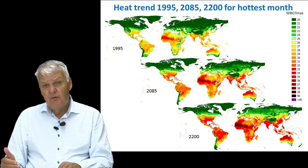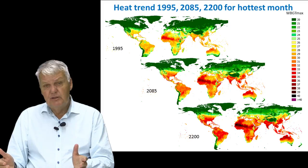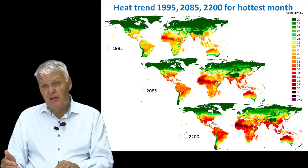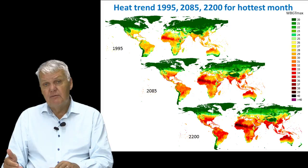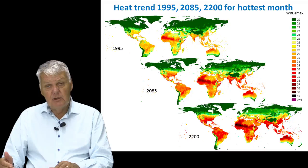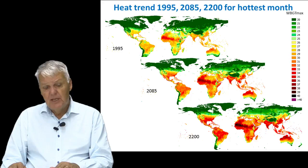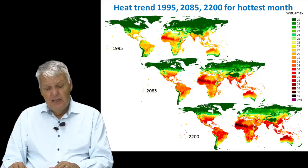The next slide shows estimates that my team have made for future heat levels in different parts of the world. The areas with red color increase very dramatically from 1995 to 2085. If we include the year 2200, it's difficult to know exact levels, but under business as usual we will have very high temperature and heat level increases into the following century. The climate change is not stopping at the end of this century.